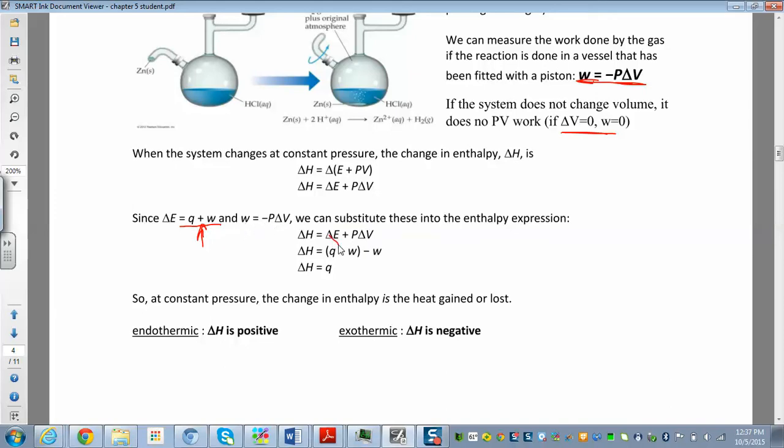So for E, I just plug in Q plus W, and then PΔV, well, that's equal to negative work because W equals negative PΔV. And so basically your work terms kind of cancel out and you get that at constant pressure, ΔH is just equal to Q,